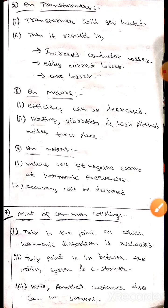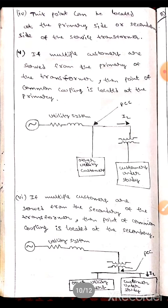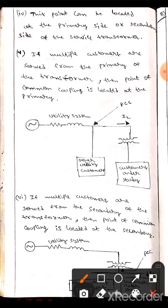This point is located between the utility system and customer, where other customers can also be served. The point can be located at the primary side or the secondary side of the service transformer. If multiple customers are served from the primary side of the transformer, then the point of coupling is called PCC.